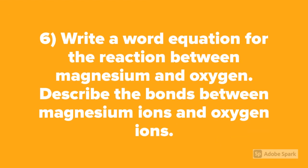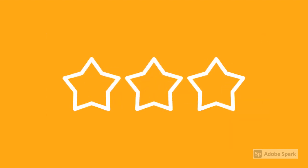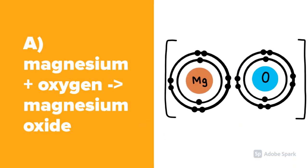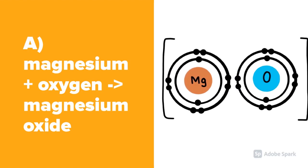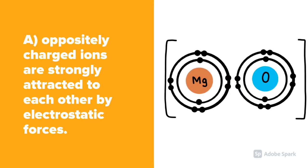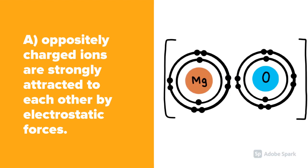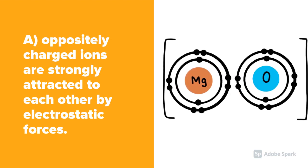Question number 6: Write the word equation for the reaction between magnesium and oxygen, and describe the bonds between magnesium ions and oxygen ions. Magnesium plus oxygen react to produce magnesium oxide. Oppositely charged ions are strongly attracted to each other by electrostatic forces.